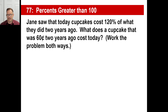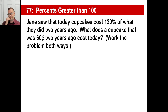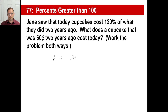One more: Jane saw that cupcakes cost 120% of what they did two years ago. If a cupcake was 60 cents two years ago, what does it cost today? Pause and think about the question you're asking. She's going: cupcakes are 120% of what they used to be. They used to be 60 cents. So the question is: what is 120% of 60? Write x = 120/100 × 60. Chop zeros: 12 times 6 is 72. The cupcake costs 72 cents.